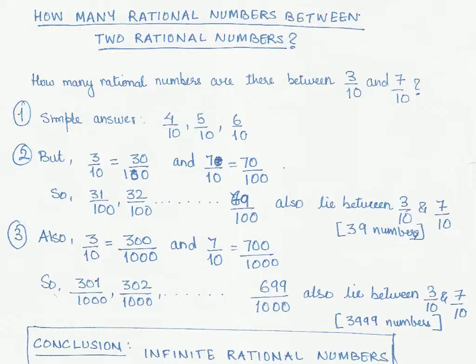So let's try to understand this using an example. We are given how many rational numbers are there between 3 by 10 and 7 by 10.